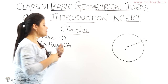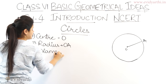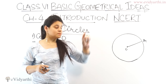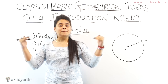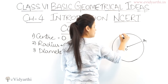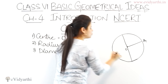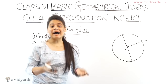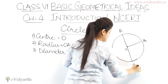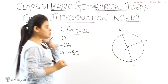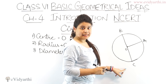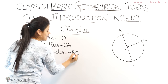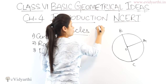Next is the diameter. Diameter is when two points on the circle are connected passing through the center. So I draw a line connecting two points on the circle that passes through the center — that is the diameter. Let's name it BC, so BC is the diameter of the circle. Also notice that half of the diameter is the radius on one side, and radius on the other side. So the diameter is always double the radius.